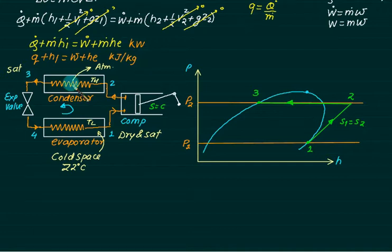Three to four is the throttling process. Throttling process is normally irreversible process. Therefore, we will show this by dotted line. This one is a vertical line because your x-axis is enthalpy axis. Enthalpy at point number three is always equals to enthalpy at point number four. Four to one is the constant pressure heat removal process. Refrigerating effect is taking place at point number one.